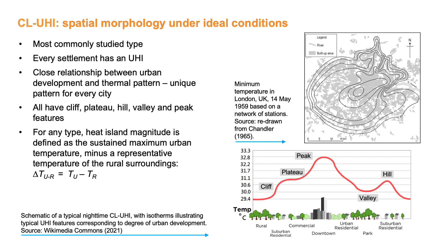The heat island map on the right-hand side for the city of London displays the close relationship between the built-up area and air temperature, with a maximum found in the city center and decreasing temperatures towards its fringes. The island pattern of isotherms can be nicely seen in this example. The heat island morphology often includes cliff, plateau, hill, valley and peak features. For any heat island type, the heat island magnitude or intensity is defined as the sustained maximum urban temperature minus a representative temperature of the rural surrounding, so delta T sub UR equals Tu minus Tr.